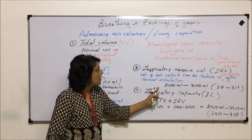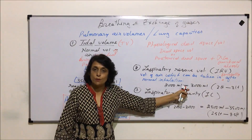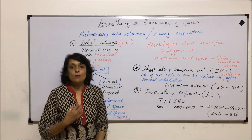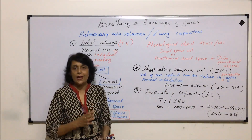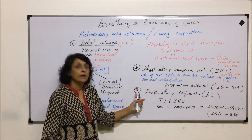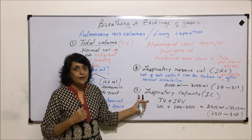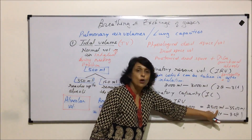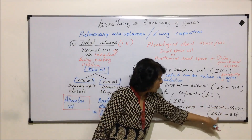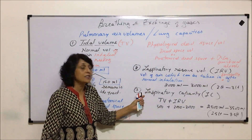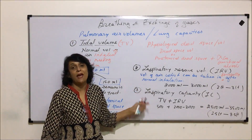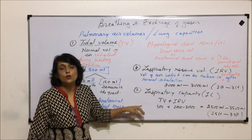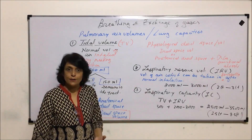So the inspiratory capacity comes to 2.5 litres to 3.5 litres — that is tidal volume of 500 milliliters plus the forcefully taken 2 to 3 litres. This is the inspiratory capacity of our lungs. Now the next terms we will discuss will be related to exhalatory volumes.